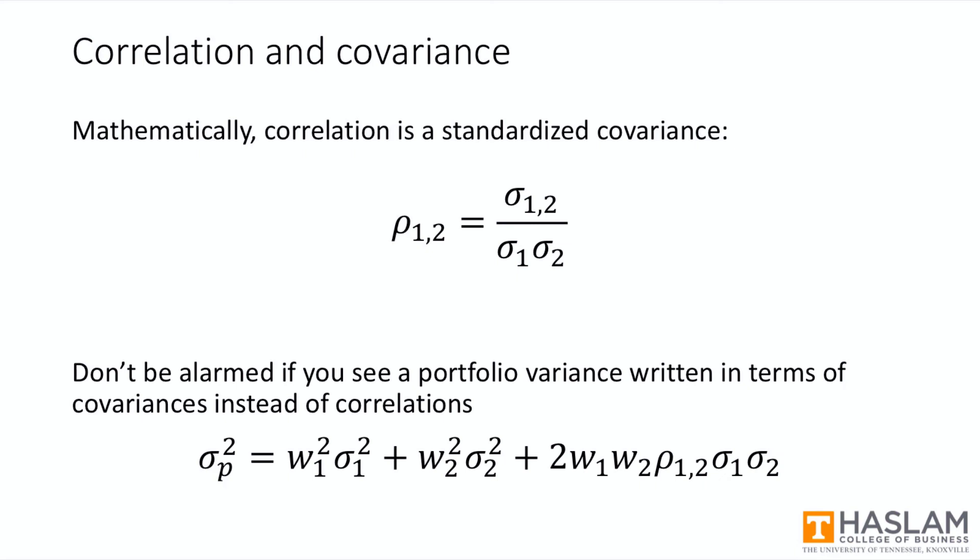I want to make one final note regarding correlation. Mathematically, we'd likely compute covariance first. It'll have the same sign as correlation, but its value is unbounded. Correlation is just a standardized covariance. We like to use correlation because it's bounded between minus 1 and plus 1, so it's easier to determine what exactly a big versus a small number is. And so to calculate correlation, you would take the covariance, so that's the sigma 1,2, and scale it by the product of the standard deviations. So again, this is what we saw in the formulas so far.